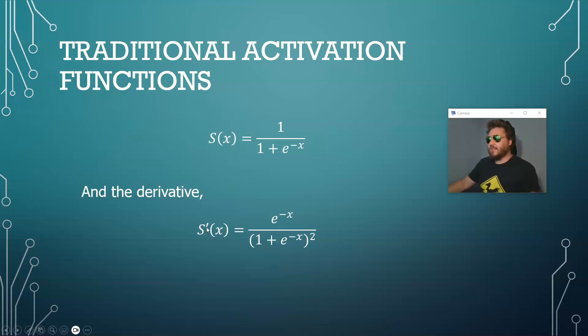What we denote that is s'(x) equals e to the negative x divided by (1 plus e to the negative x) and that's squared. And this is just for the logistic function or sigmoid function, we're not going to do it for all the activation functions just this one as a demonstration.